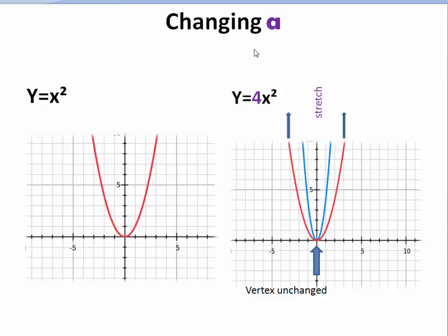If we now add an a or change the a in the standard form of the equation, say we're using a as 4, we get y equals 4x squared. This is a stretch, it's as if we get the original graph, the original parabola and stretch it upwards. And we get this new blue line parabola still going through the vertex 0, 0. The vertex remains unchanged but the slope of the graph becomes steeper.